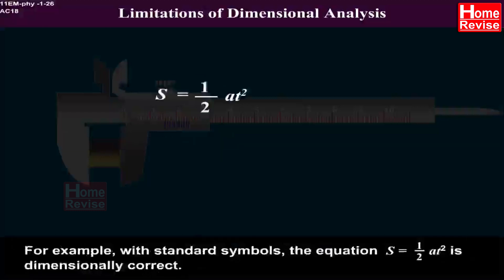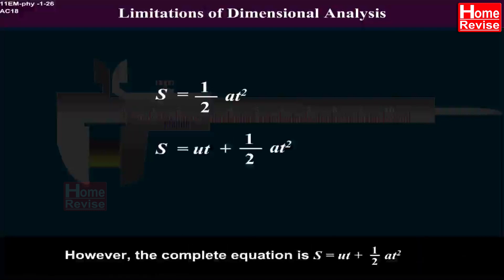with standard symbols, the equation s is equal to 1 upon 2 at square is dimensionally correct. However, the complete equation is s is equal to ut plus 1 upon 2 at square. 5.